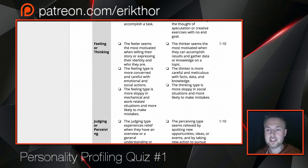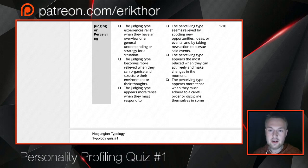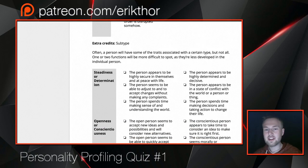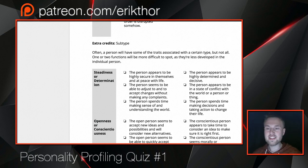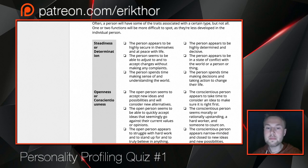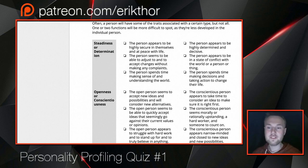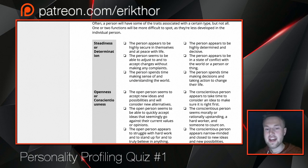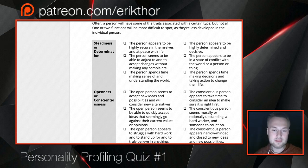A person who is strongly judging or strongly perceiving might seem ambiverted, so that's also worth noticing. I also encourage you to look at subtypes — it's a bit of an extra credit thing. Some basic things to look for are steadiness versus determination, and openness or conscientiousness. If you nail down that a person appears intuitive but can't decide if they're thinking or feeling, that's a point for openness. If they're clearly a thinker but you're unsure about intuitive or sensing, that points to conscientiousness.